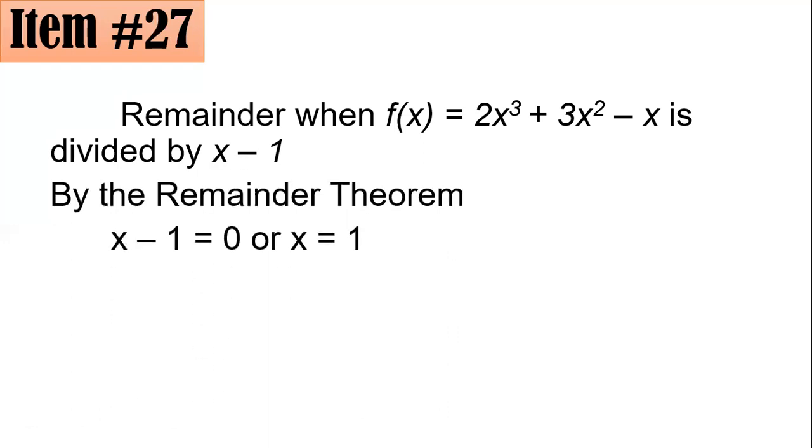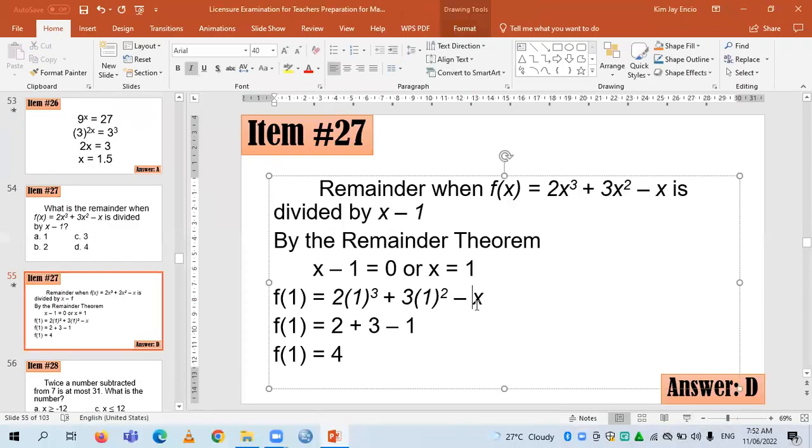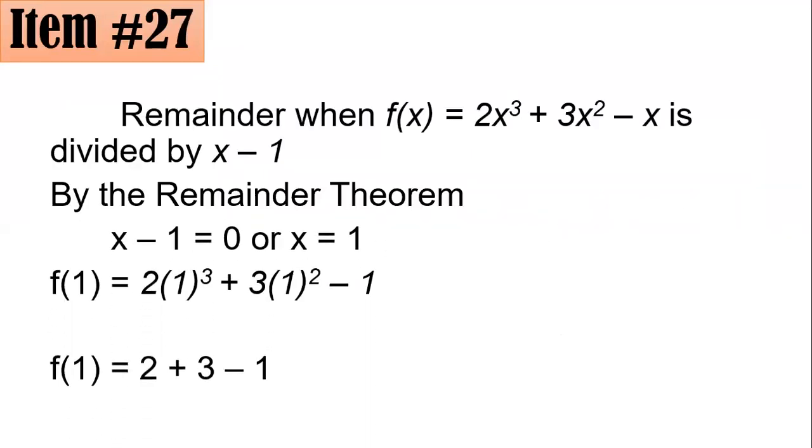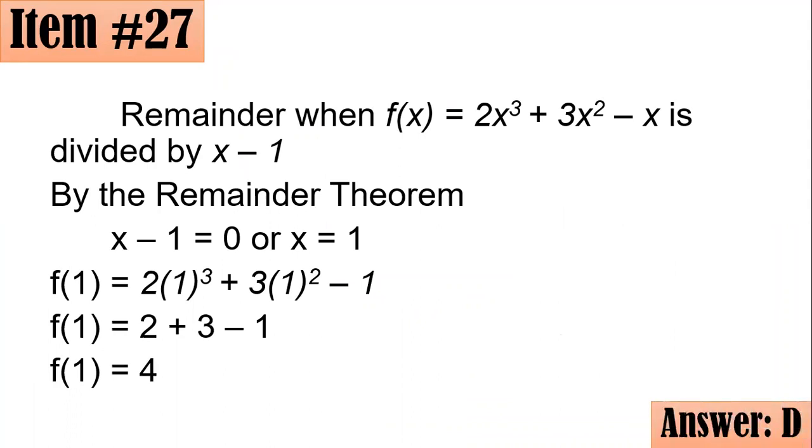What you will do next is, if you let this as your f(x), you will solve for f(1). You will substitute it here. So that becomes f(1) = 2 times 1³ + 3 times 1² - 1. I forgot to substitute it there. So with such, you have 2 + 3 - 1. That's 5 - 1 or simply 4. Letter D is the correct answer. I hope you understood it.